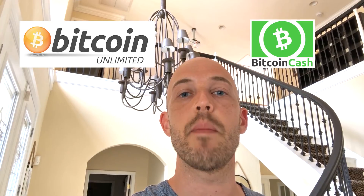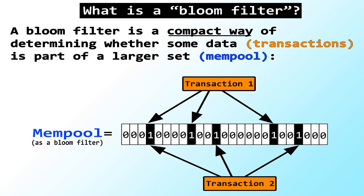This is awesome because graphene technology essentially is a more efficient method of transmitting blocks. It uses bloom filters just like compact blocks does, but in a more efficient way by not transacting the transaction IDs. Since all these block propagation technologies are using bloom filters, I thought it would be smart to quickly show in a very simplified form what a bloom filter is doing.